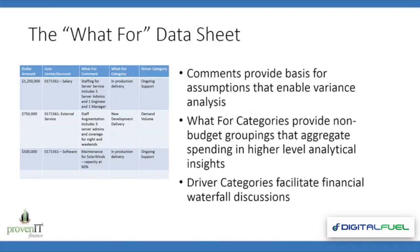The first step on this journey is what I call the 'what for' data sheet. This is a place where I can create the ability to gather into my process the additional insights and context needed to drive the variance analysis between planning, forecasting, and actuals. Most ERP systems today allow for an extract that gives you dollars, a cost center, and an account line — for example, salary. By adding additional metadata such as a 'what for' comment, a 'what for' category, and a driver category, I can begin to close the gap between the kind of planning I'm doing and the understanding I have about those numbers when I'm planning them — so when actuals come in, I have something to compare against.